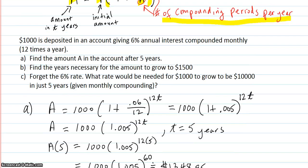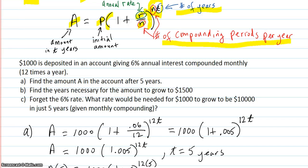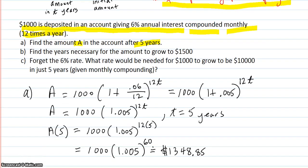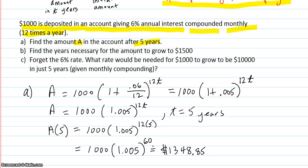Now let's go down to our particular problem here. $1,000 is deposited in an account giving 6% annual interest compounded monthly. That's 12 times a year. Find the amount A in the account after five years. And then they have part B and part C. So part A, after five years, here's the formula.